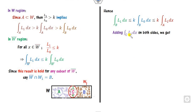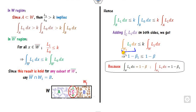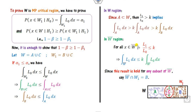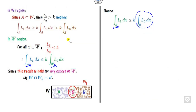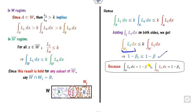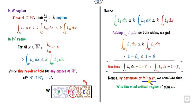Adding the integral of L1 over C to both sides: on the left we get B union C which is W1, and on the right we get A union C which is W. So the integral of L1 over W1 is less than or equal to the integral of L1 over W. This means 1 minus beta1 is less than or equal to 1 minus beta. By the definition of the most powerful test, W is the most powerful critical region — also called the best critical region (BCR).